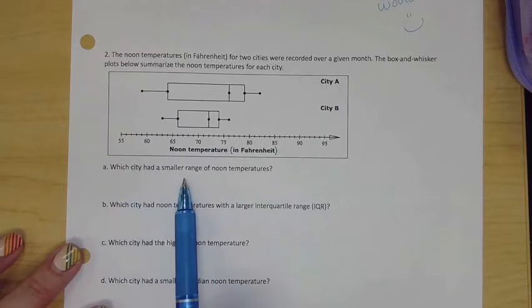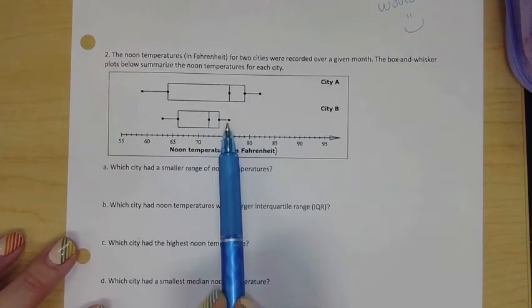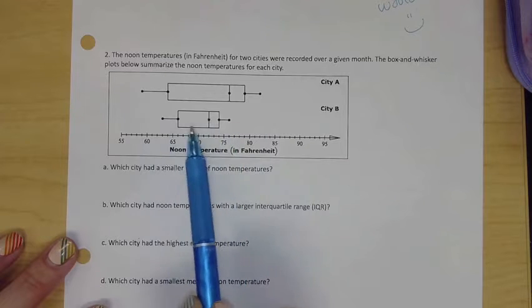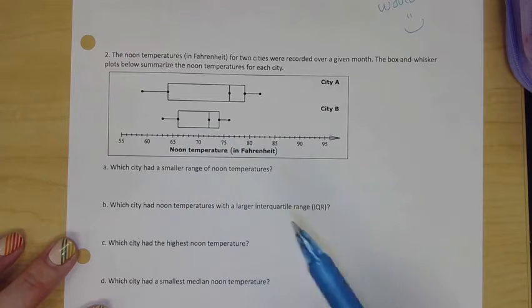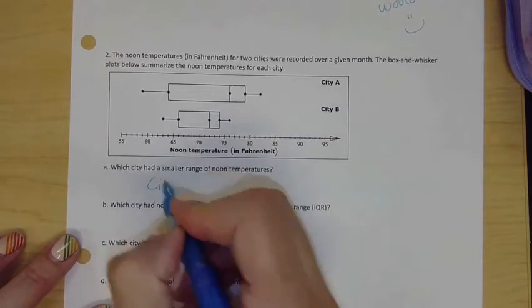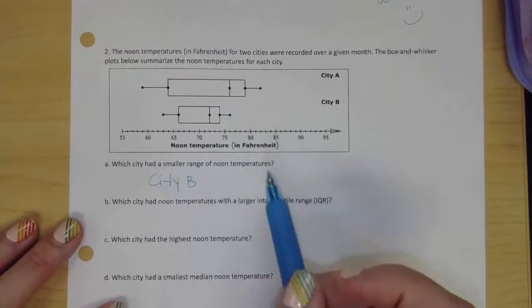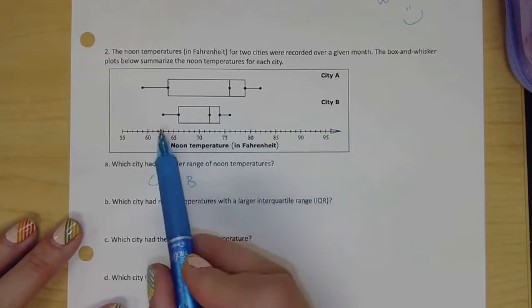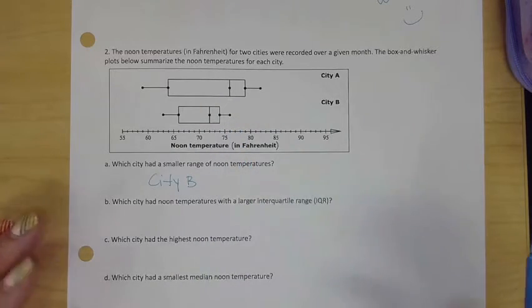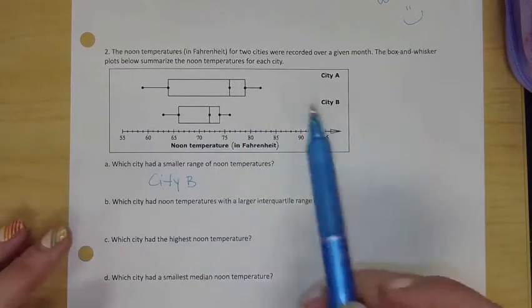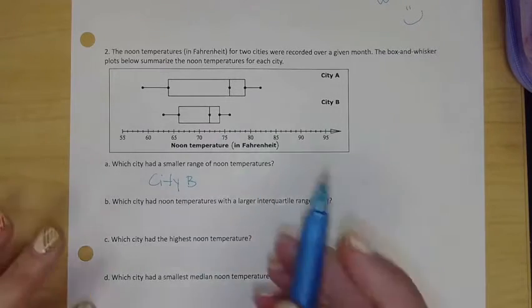Which city has smaller range of noon temperatures? You can visually tell that if I subtract the biggest from the smallest, this is the shorter amount of distance of noon temperatures, so this is going to be City B. You can explain your response by saying that the minimum and the maximums are in a smaller range, though it doesn't ask us to explain.